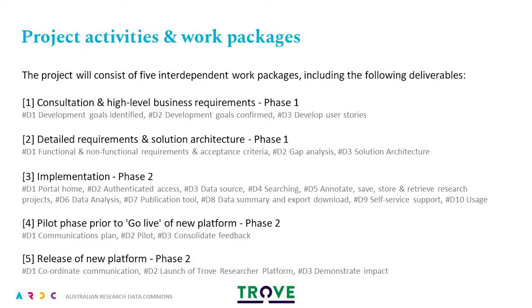Work package three, phase two, begins the implementation of the requirements, use cases and solutions architecture identified in the previous packages. It will involve the design and development of the home portal, implementing authentication and access, examining the data sources, developing and deploying search functionality within the portal, developing annotation, save, store and retrieve research project functions, developing the data analysis and publication tool, as well as summary data and export download functionality. It will also include self-service support and usage reporting functionality.